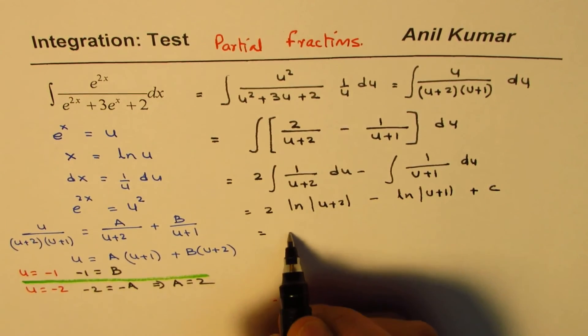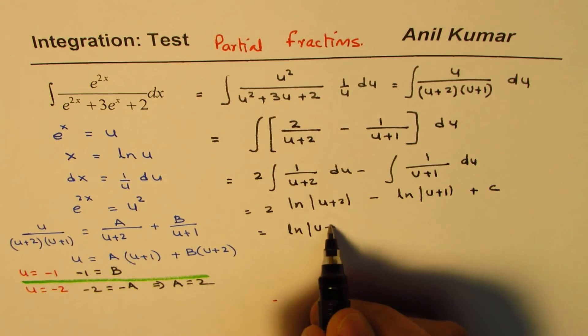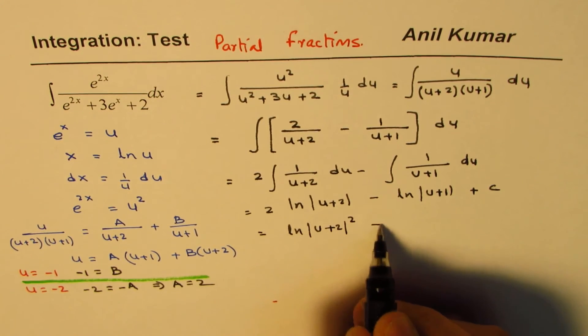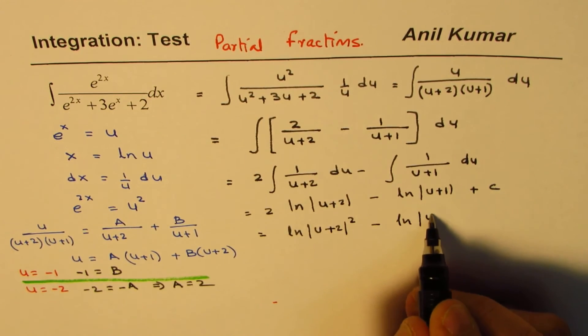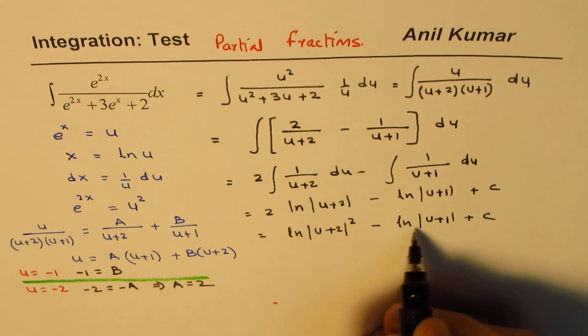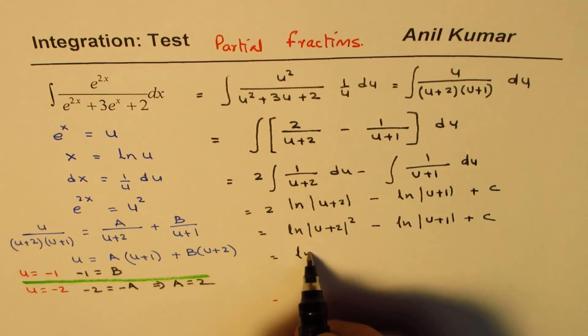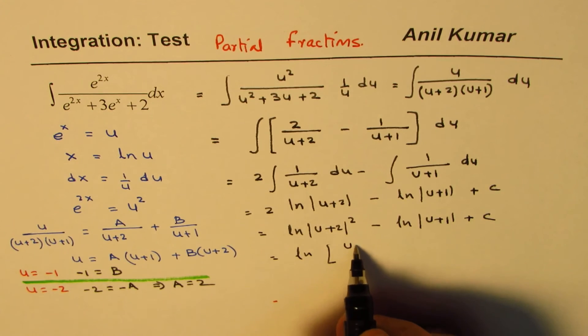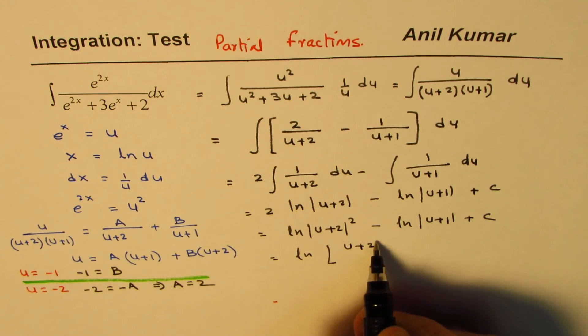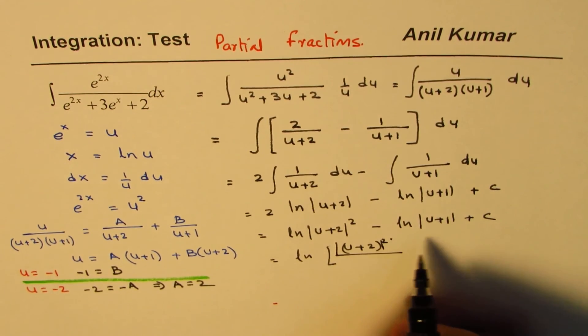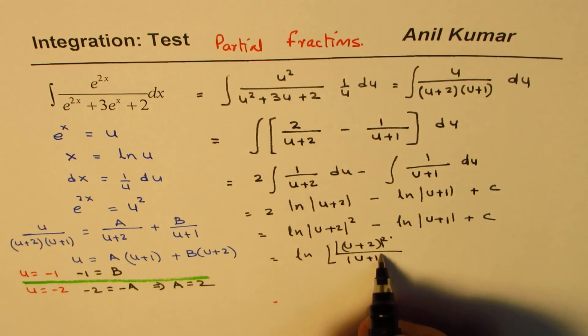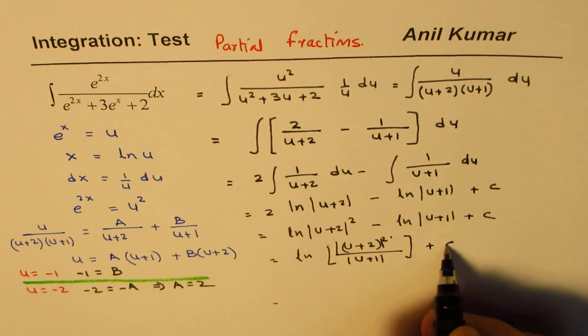So I could write this as equals to ln absolute value of u plus 2 square, minus ln absolute value of u plus 1 plus c. And you can combine these two, so we get ln, you get u plus 2 whole square absolute value, over u plus 1, plus c. So that becomes your solution to the given question.